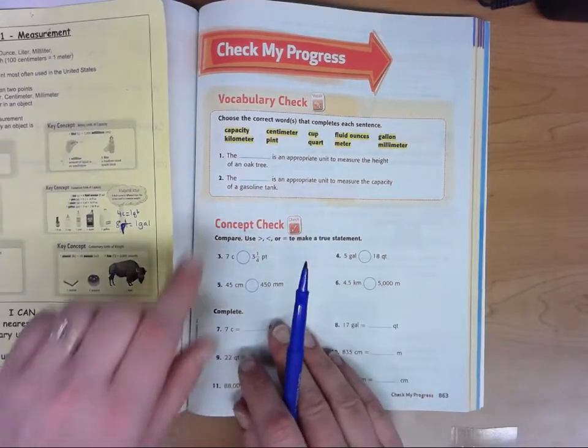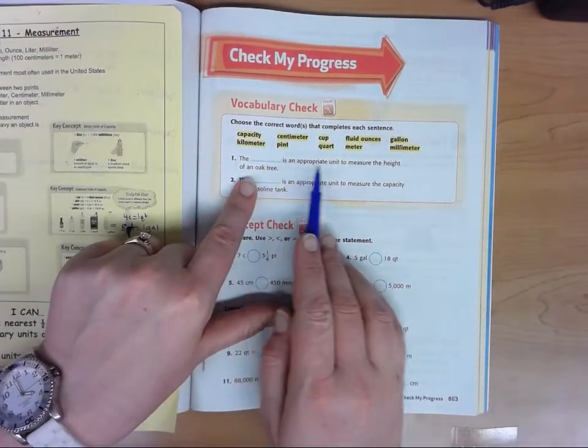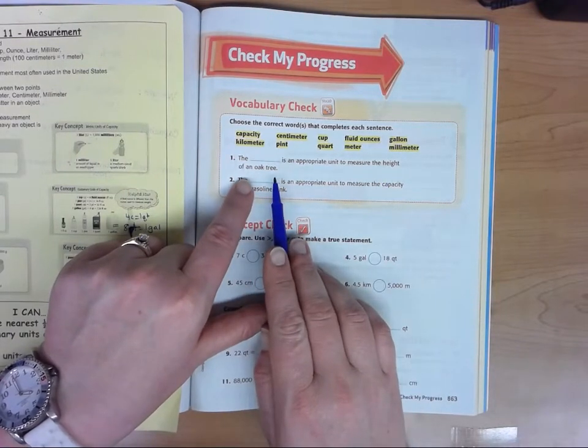We start with two vocabulary words. It says the blank is an appropriate unit to measure the height of an oak tree.